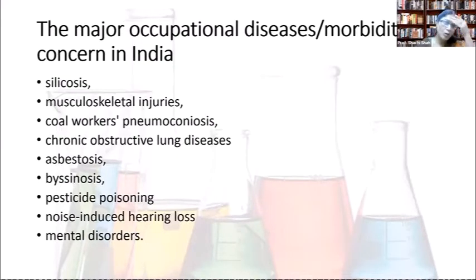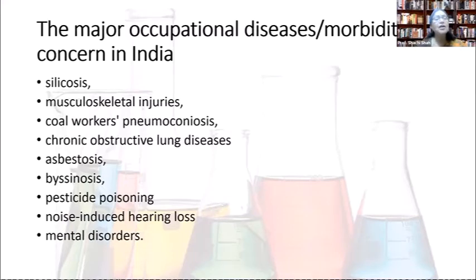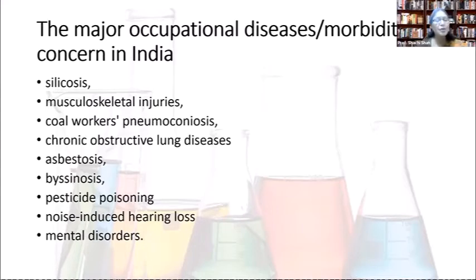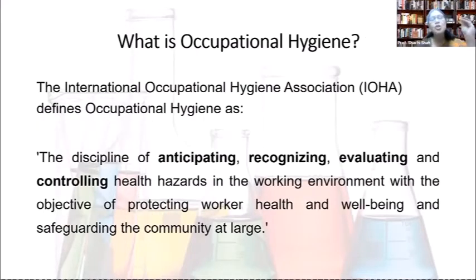Major occupational diseases of concern in India include silicosis in mine workers, musculoskeletal injuries in agriculture workers carrying heavy loads, coal workers' pneumoconiosis, chronic obstructive lung disease, asbestosis, byssinosis, pesticide poisoning, noise-induced hearing loss, and mental disorders.